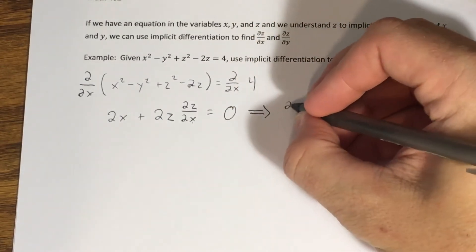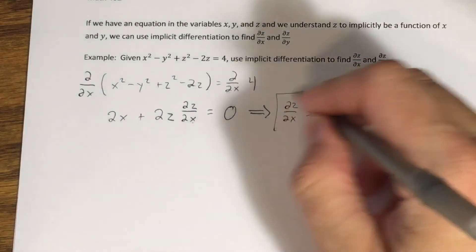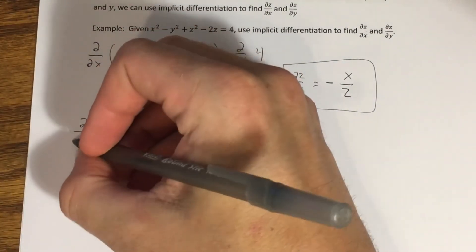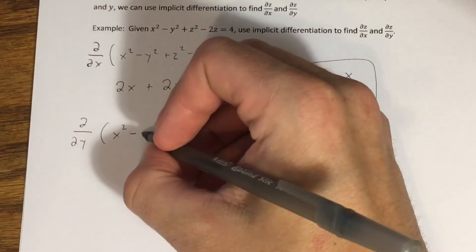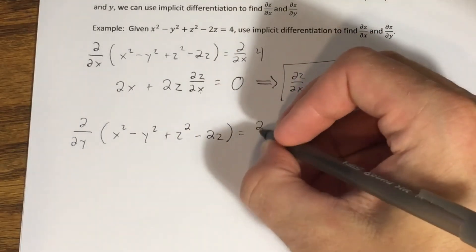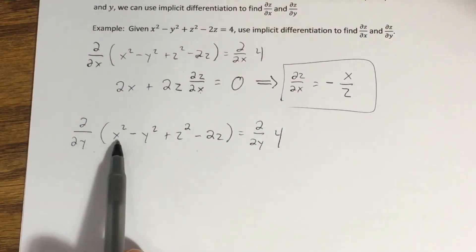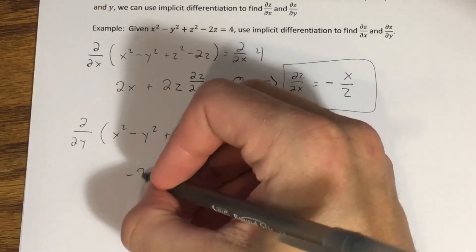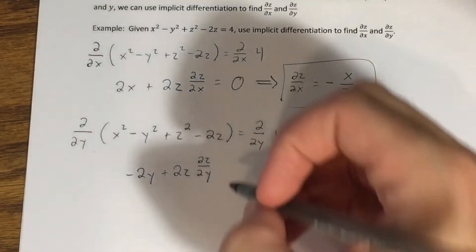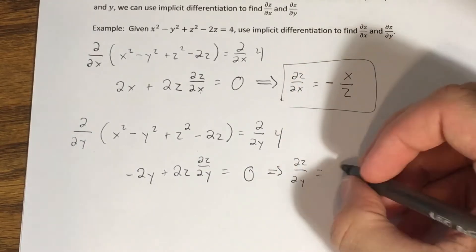Solving for the partial of z with respect to x gives us -x/z after simplifying. For the partial of z with respect to y, I differentiate both sides with respect to y instead. The x² term goes to zero, -y² gives -2y, and z² gives 2z times the partial of z with respect to y. Solving gives us the partial of z with respect to y equals y/z.